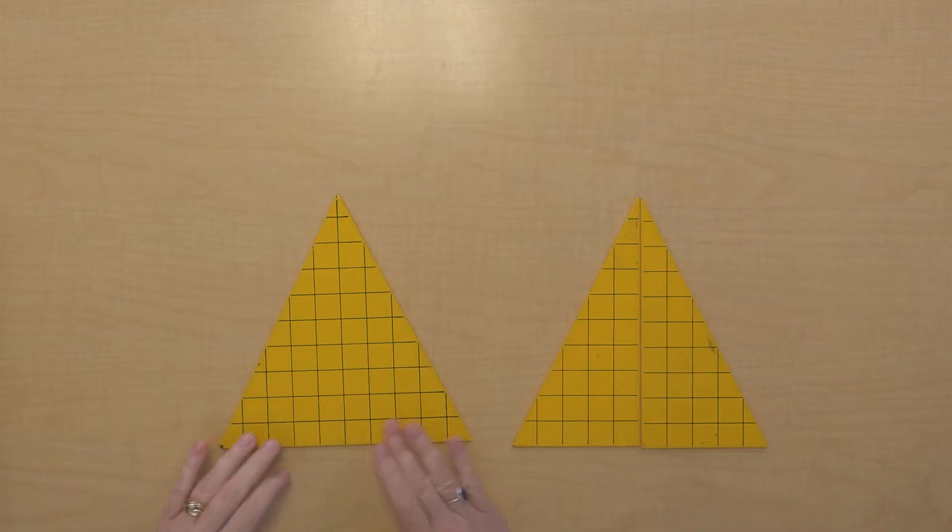Today I've got some yellow grid material to show you. What do we have here? We've got an acute triangle. Could we easily calculate the area of this right now? No, look, we've got all these squares that are cut off.